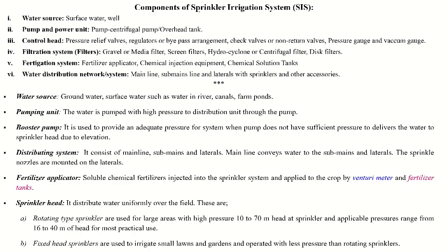The components of the sprinkler irrigation system consist of the water source — that is your surface water, well, or ground water — and the pump and power unit. The pump may consist of a centrifugal pump or submersible pump, and the power unit may be electrical energy, solar energy, or a diesel or petrol engine.